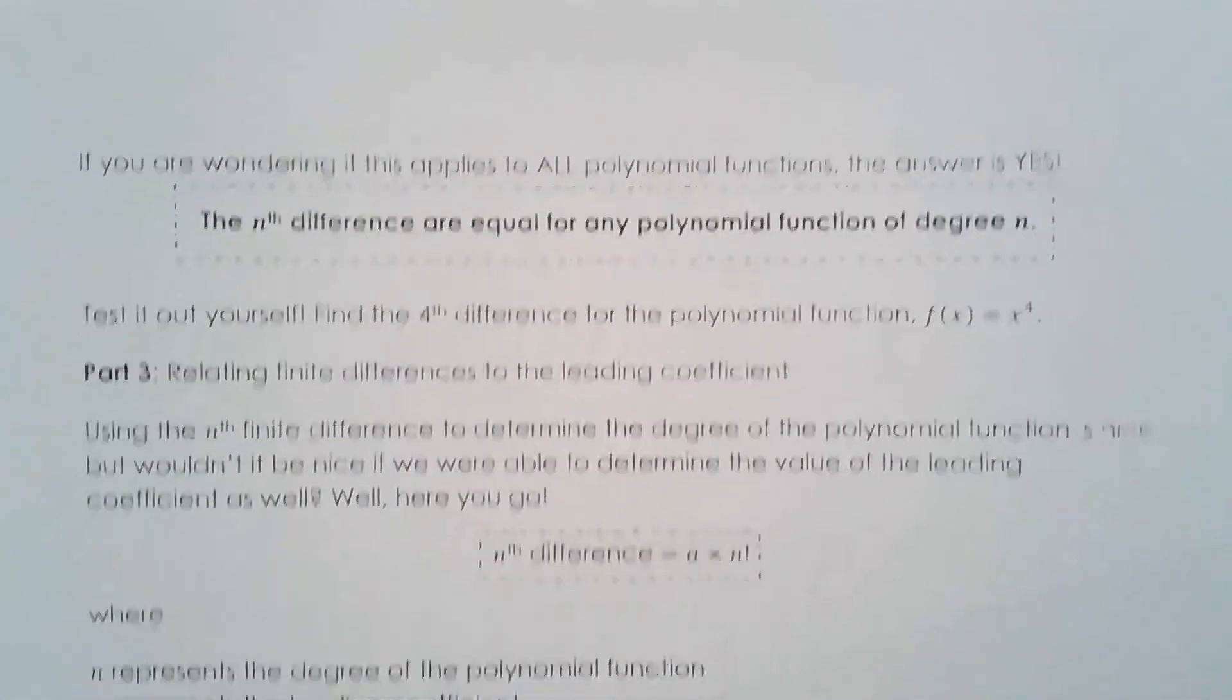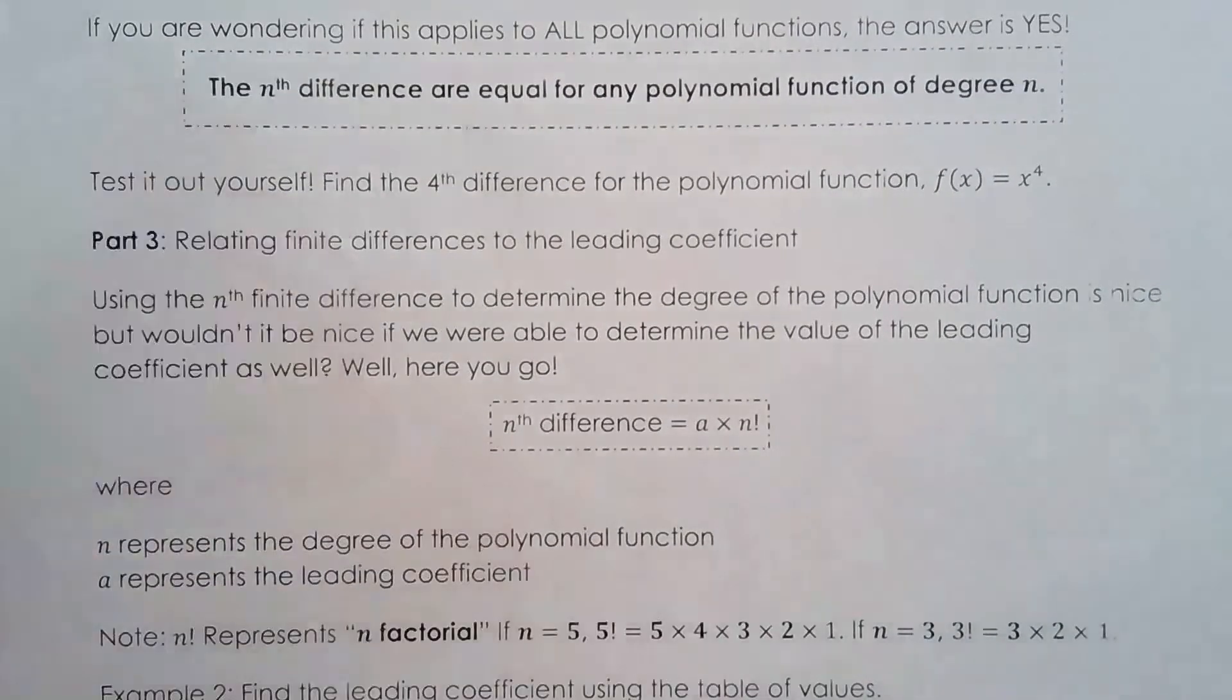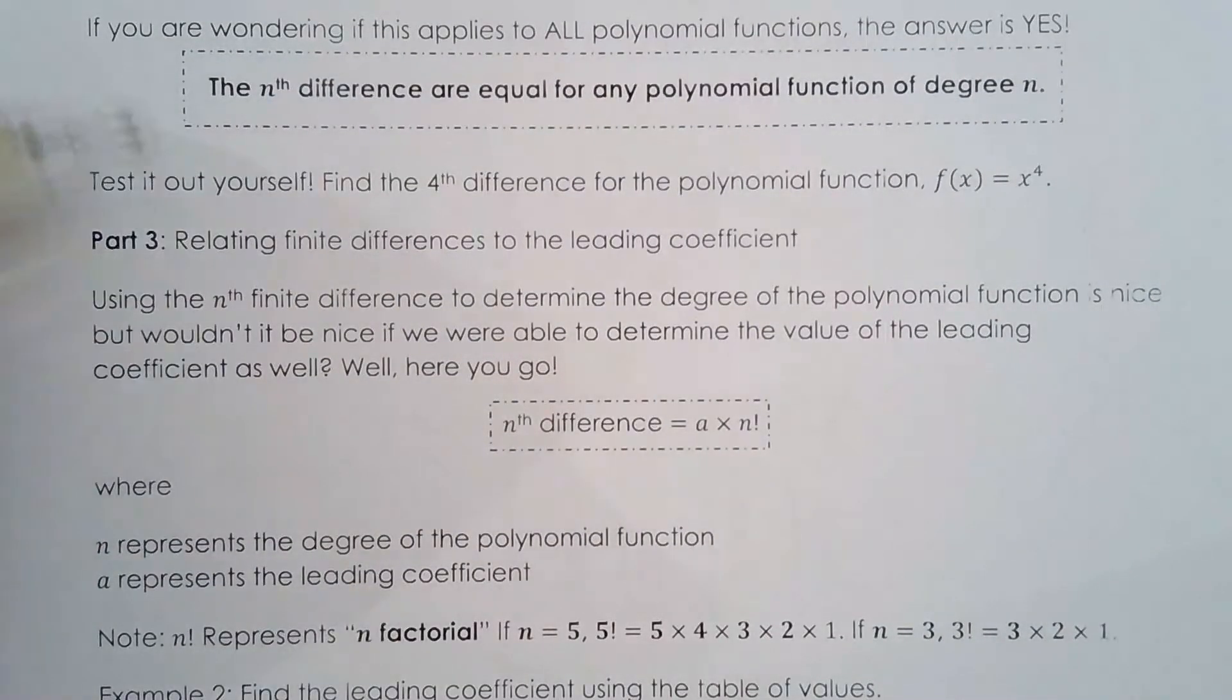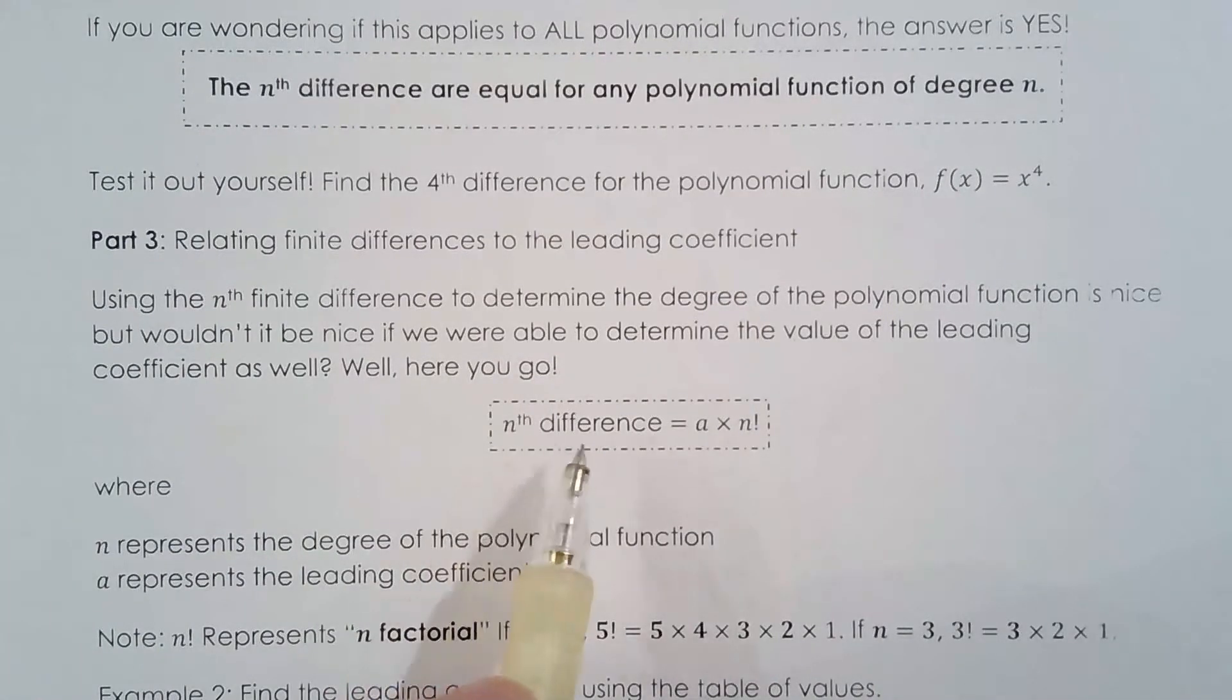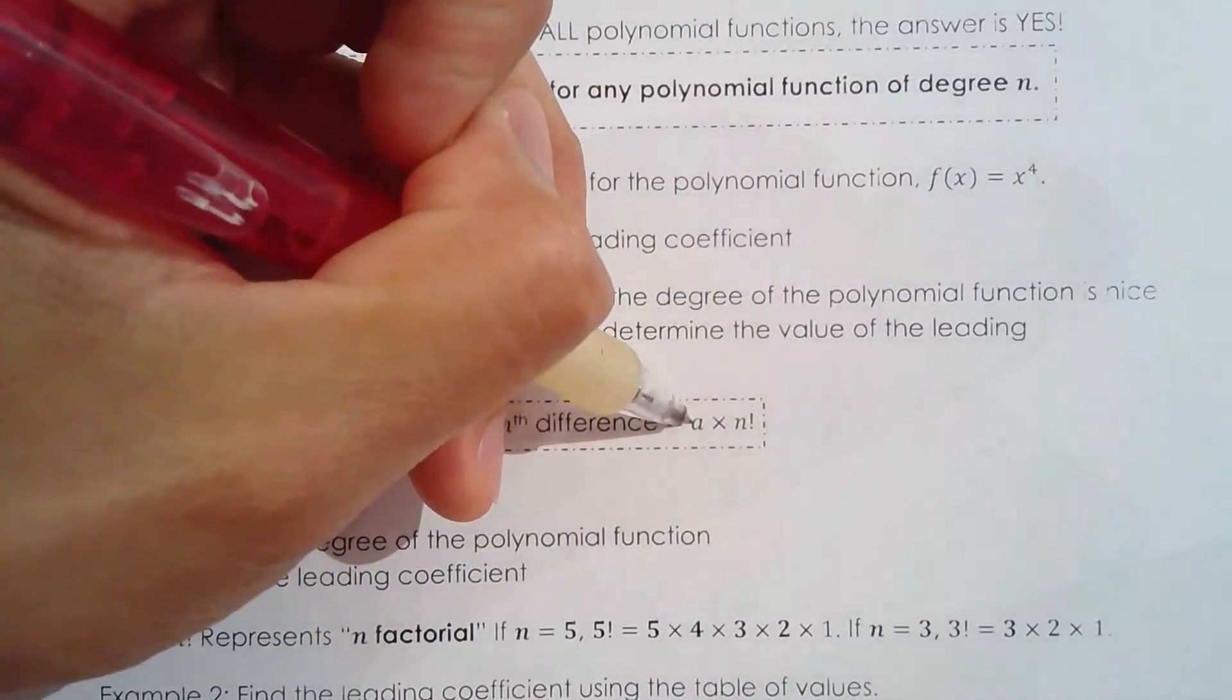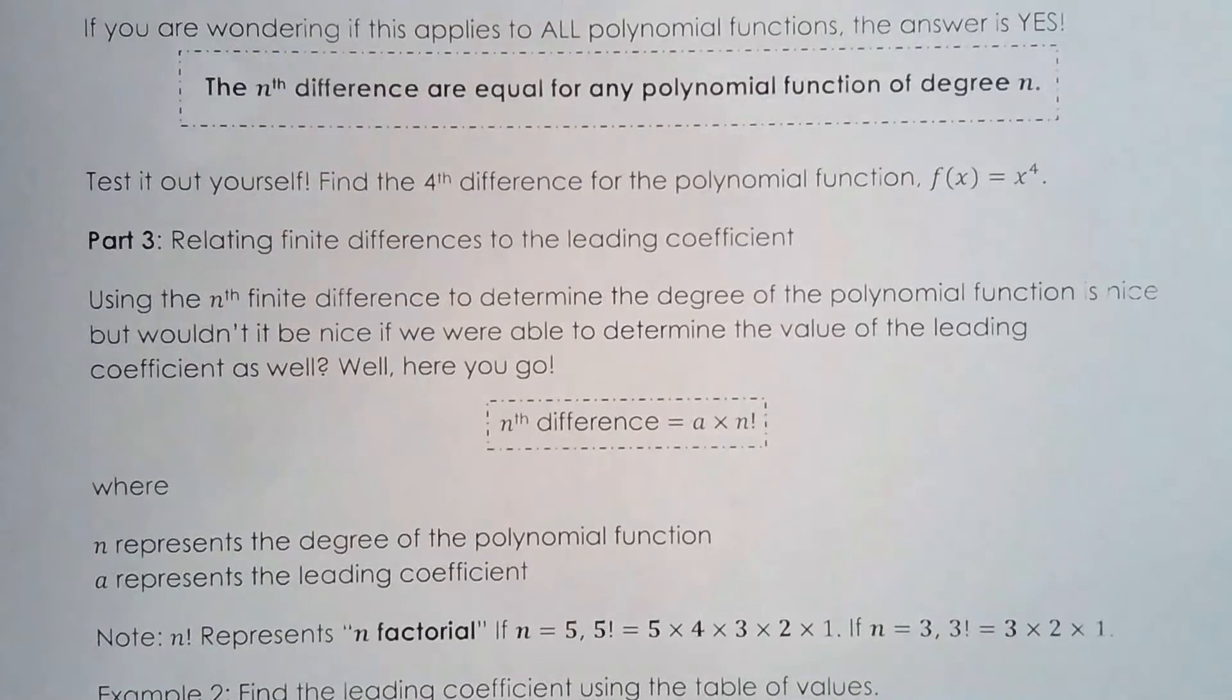So in addition to this beautiful relationship, we're going to draw another relationship. The nth difference is equal to a times n factorial. So this is very new notation to you. I won't go into great detail about factorials because you'll learn more about that in data management. But I will say a represents the leading coefficient, and n factorial represents how many ways you can arrange n items.